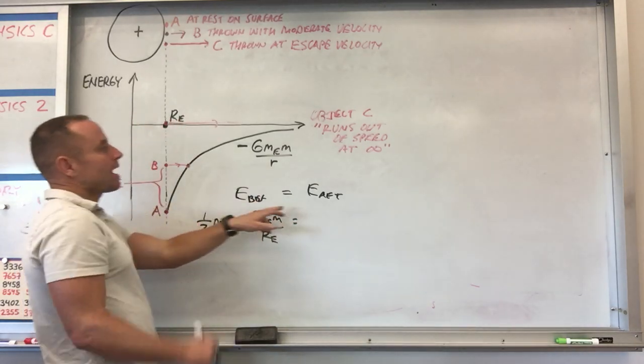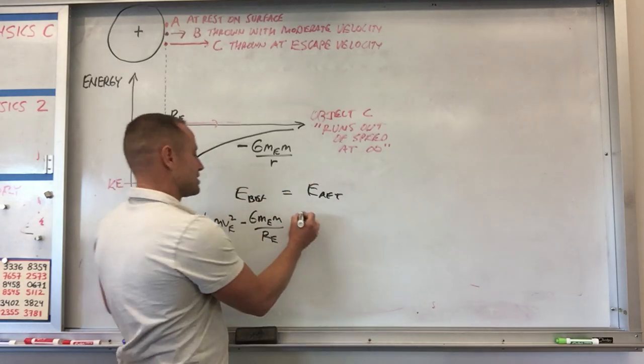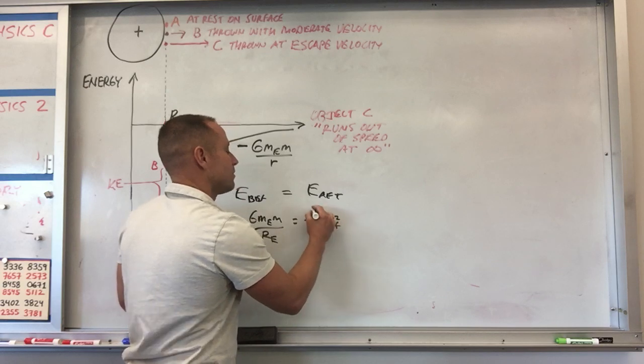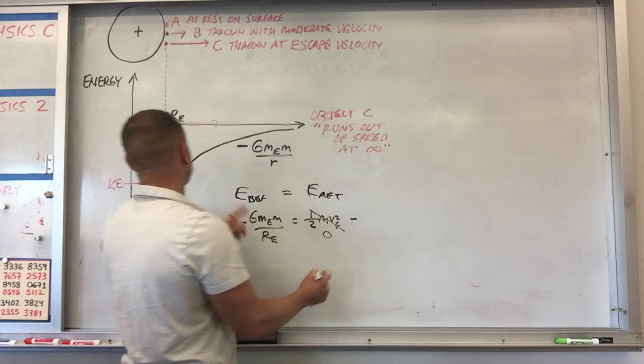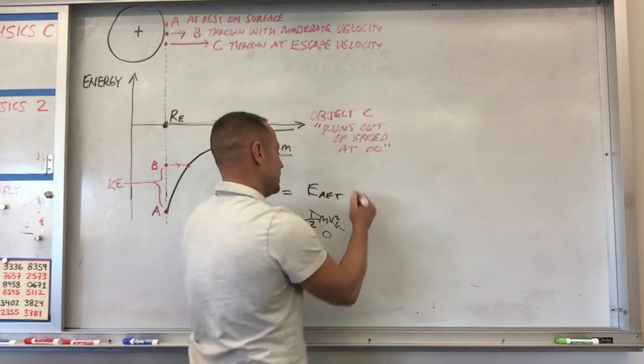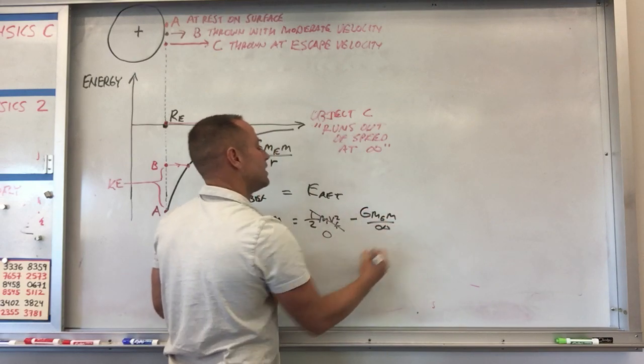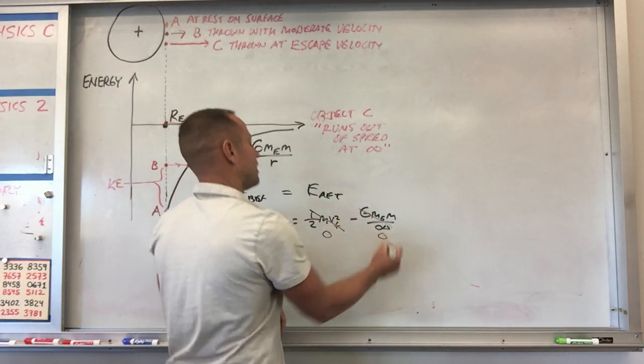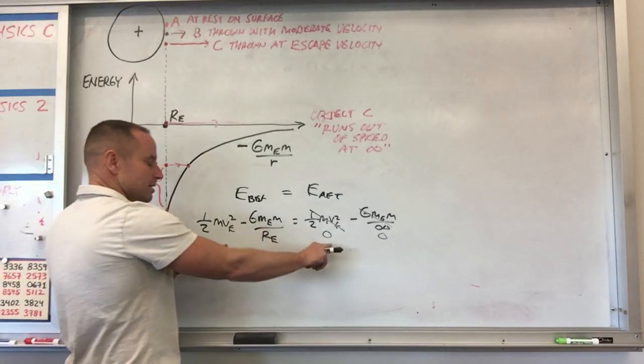Now out at infinity, what we want to have it do is run out of speed out there. So you could think of its kinetic energy, well, you could say 1/2 m v_final squared, but this is going to be zero because we let it run out of speed. And then likewise, we check what the gravitational potential energy is out at infinity. So it would be like minus GMₑm over infinity. Well, you divide something by a galactically huge number, that's gone too. So to find the escape velocity, we basically just have to solve these two terms equal zero. So you can just move this term to the other side.